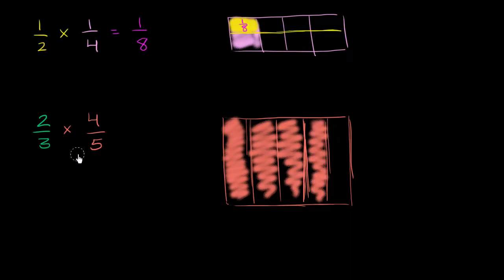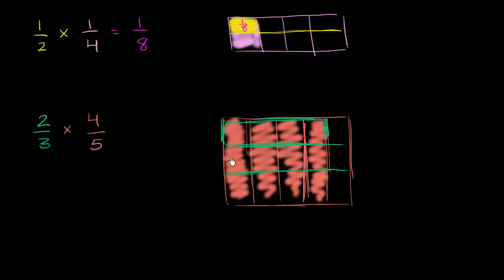Now we can view this as 2 thirds of the 4 fifths. We could take this section and divide it into thirds — three equal sections. So that's 1 third and then 2 thirds. We took each of the five equal sections and divided them into three equal sections. So 2 thirds of the 4 fifths is this part right over here — that would be 2 thirds times 4 fifths.